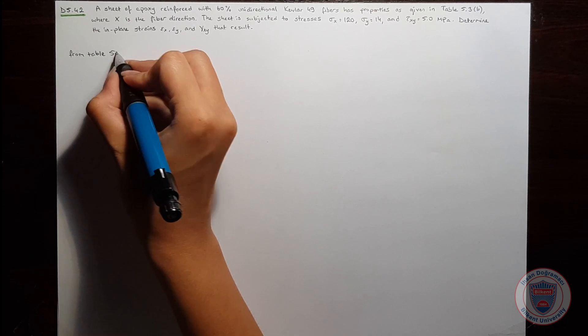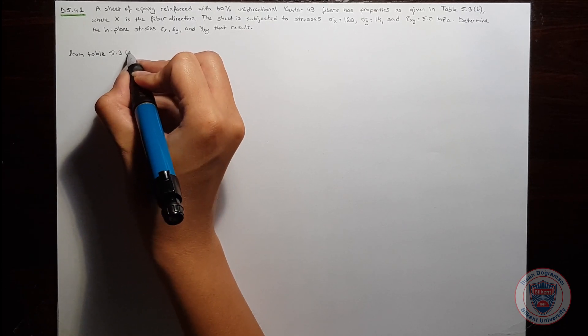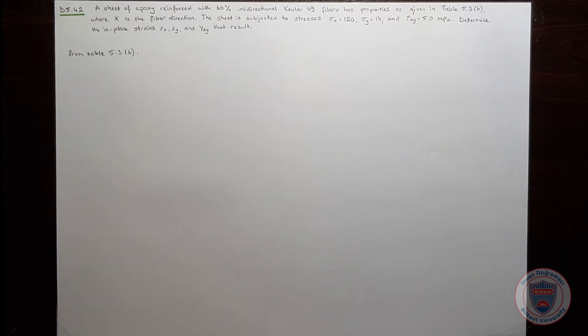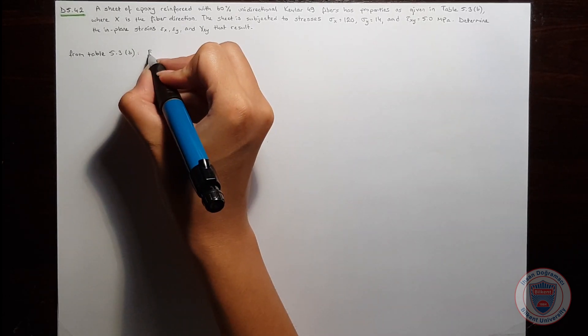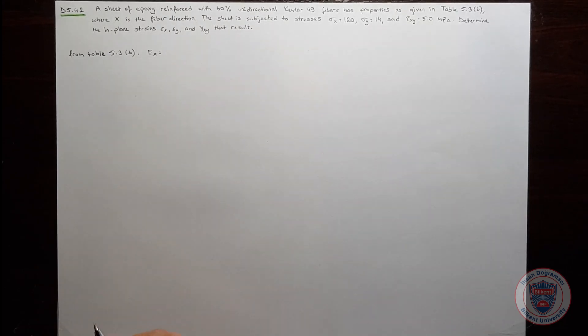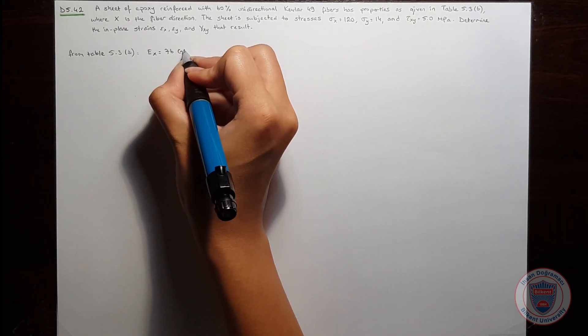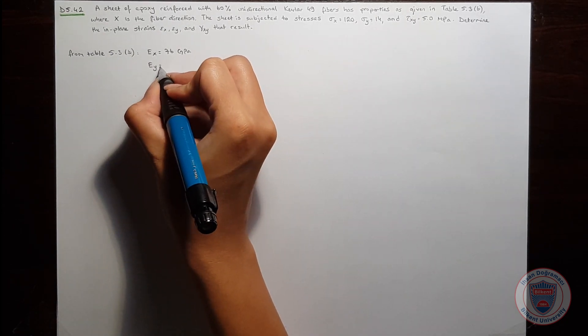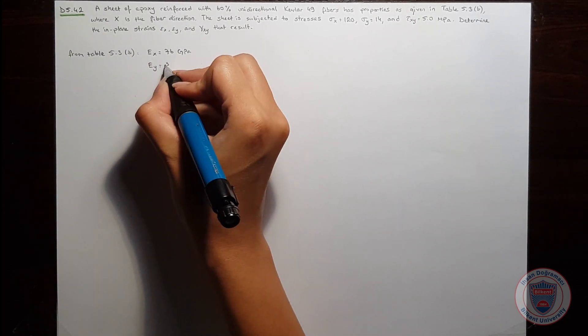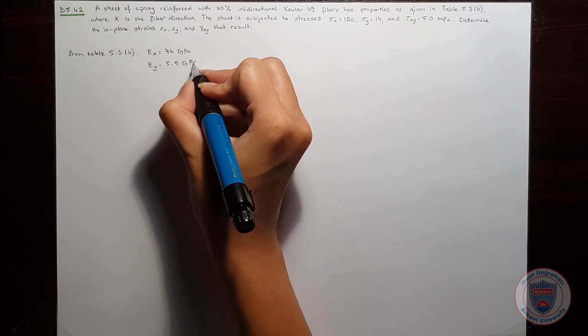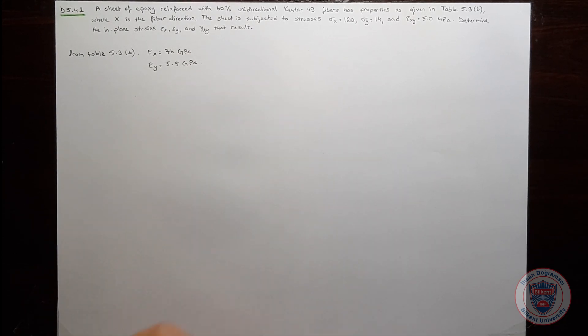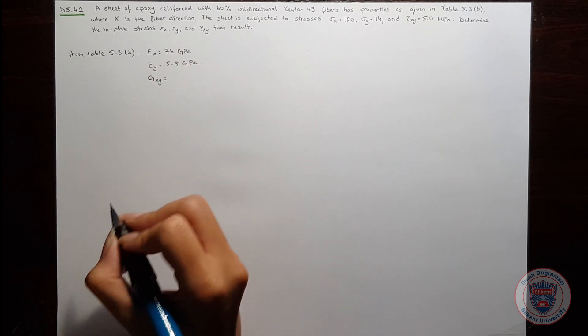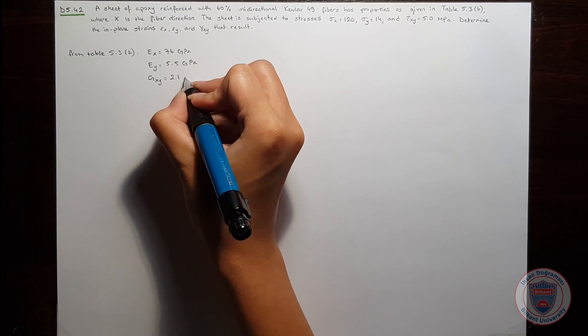From table 5.3 part b, we have that EX is equal to 76 GPa, EY is equal to 5.5 GPa, and GXY is equal to 2.1 GPa.